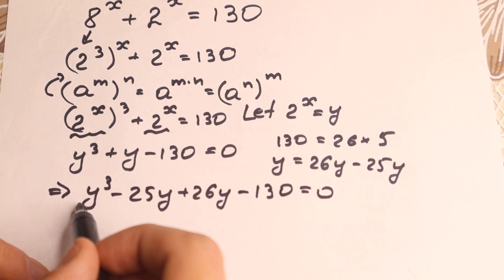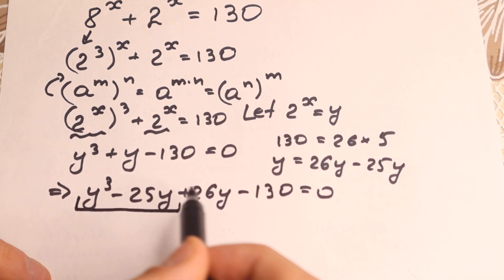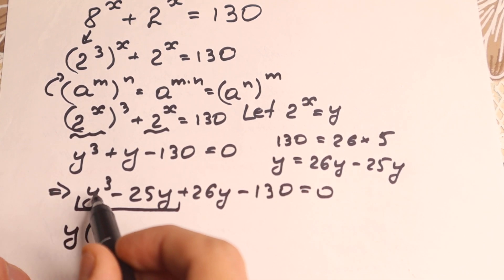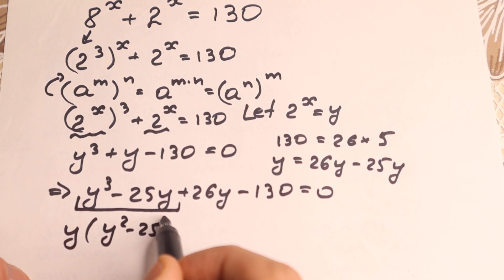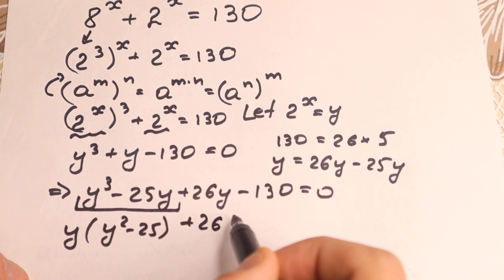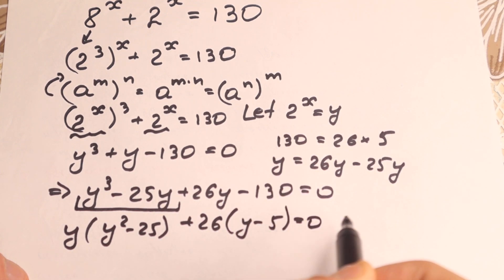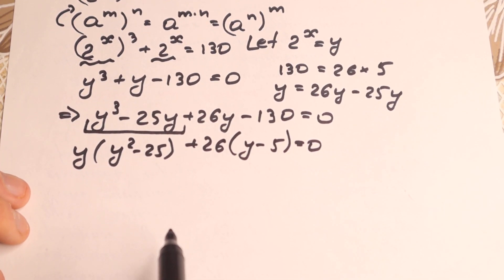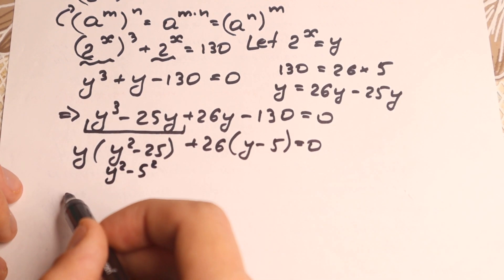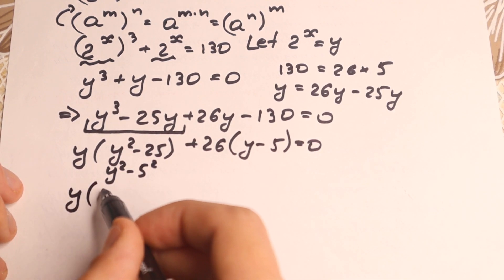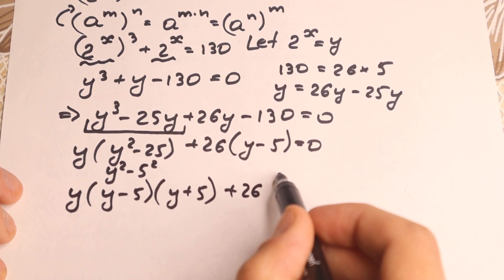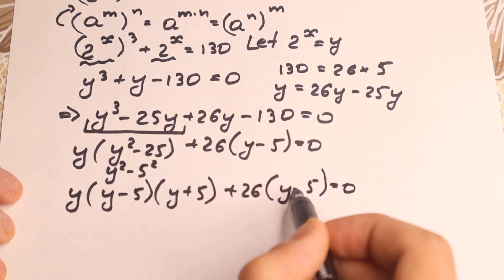If we group and factor — factoring y from the first part and 26 from the second — we get y times (y squared minus 25), plus 26 times (y minus 5), equal to zero. And y squared minus 25 is the same as y squared minus 5 squared, which is our difference of squares identity. So we have y times (y minus 5)(y plus 5) plus 26(y minus 5) equal to zero.